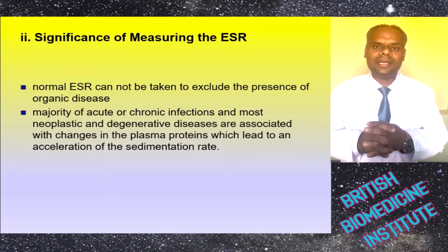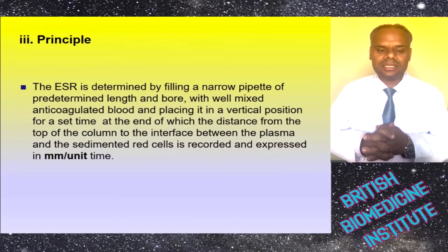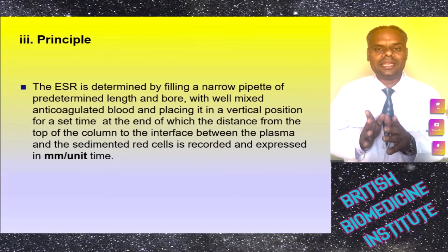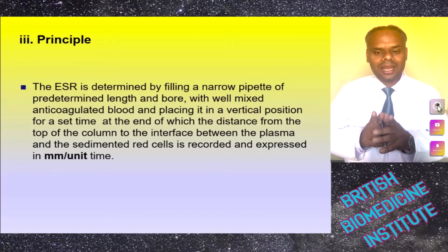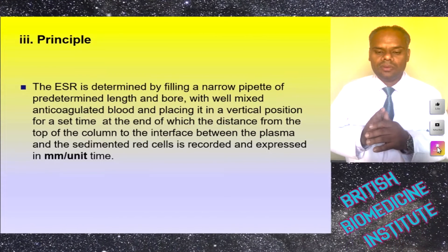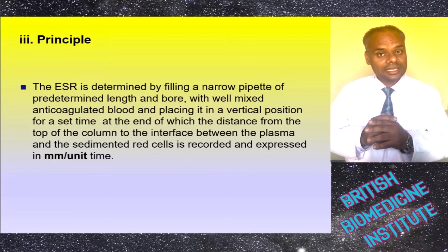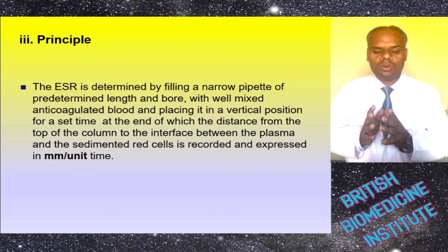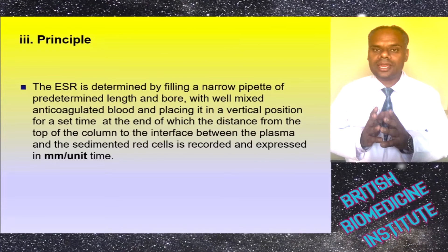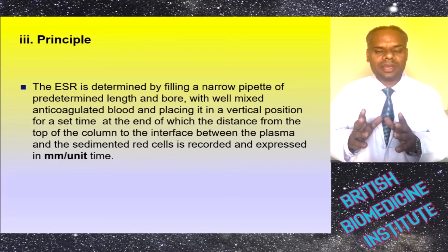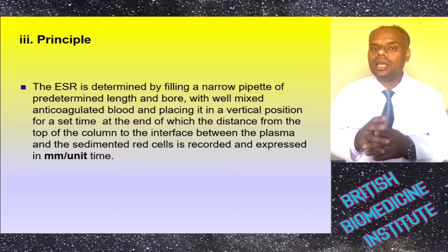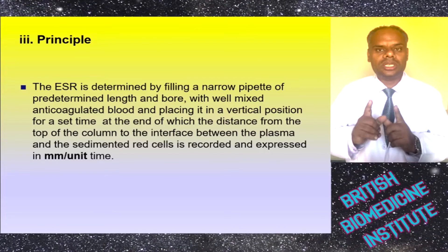The principle behind ESR is that it is determined by filling a narrow pipette of predetermined length and bore with well-mixed anticoagulated blood and placing it in a vertical position for a set period of time. At the end of this period, the distance from the top of the column to the interface between the plasma and the sedimented red cells is recorded and expressed in mm per unit time.